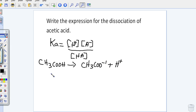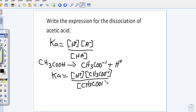To write the expression, Ka equals the concentration of H-plus. Instead of writing A, you put in the anion, which is CH3COO-minus. And you divide that by the concentration of the acid, which is CH3COOH.